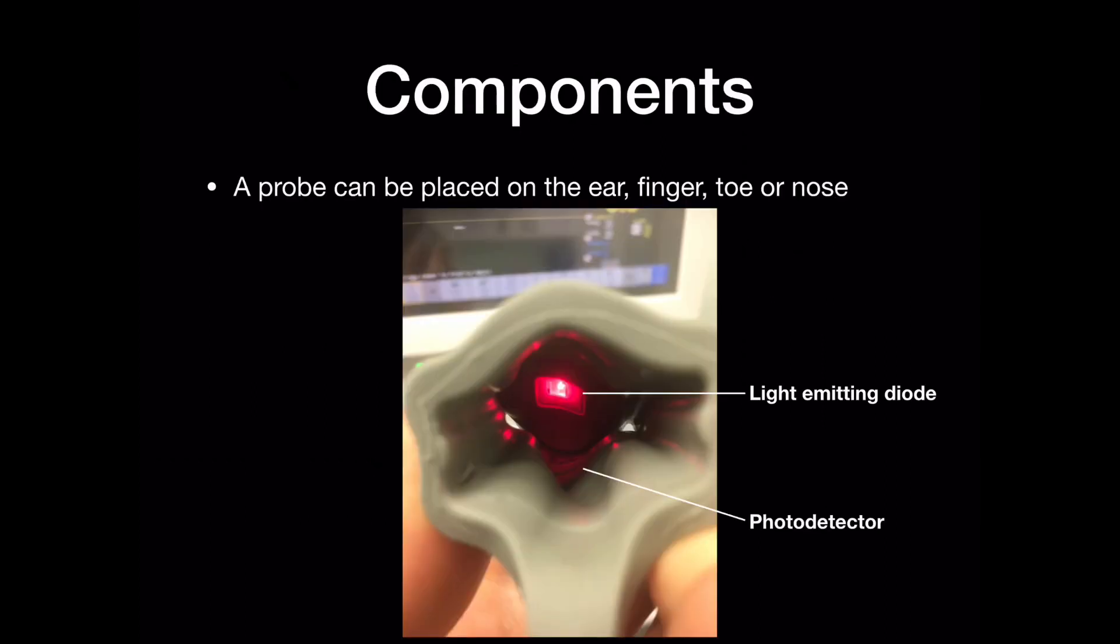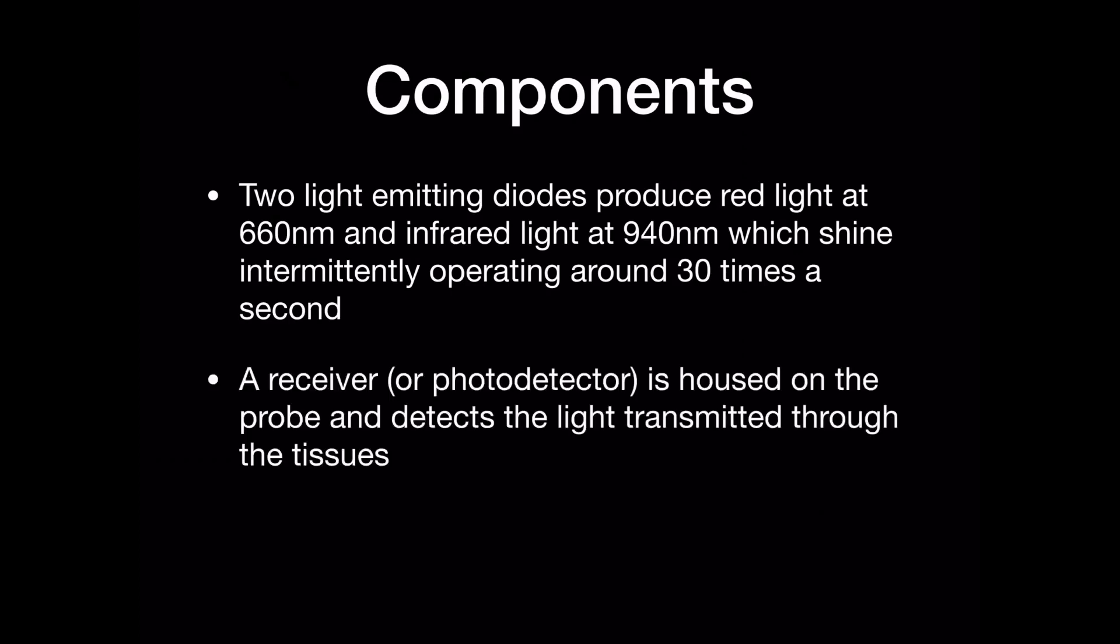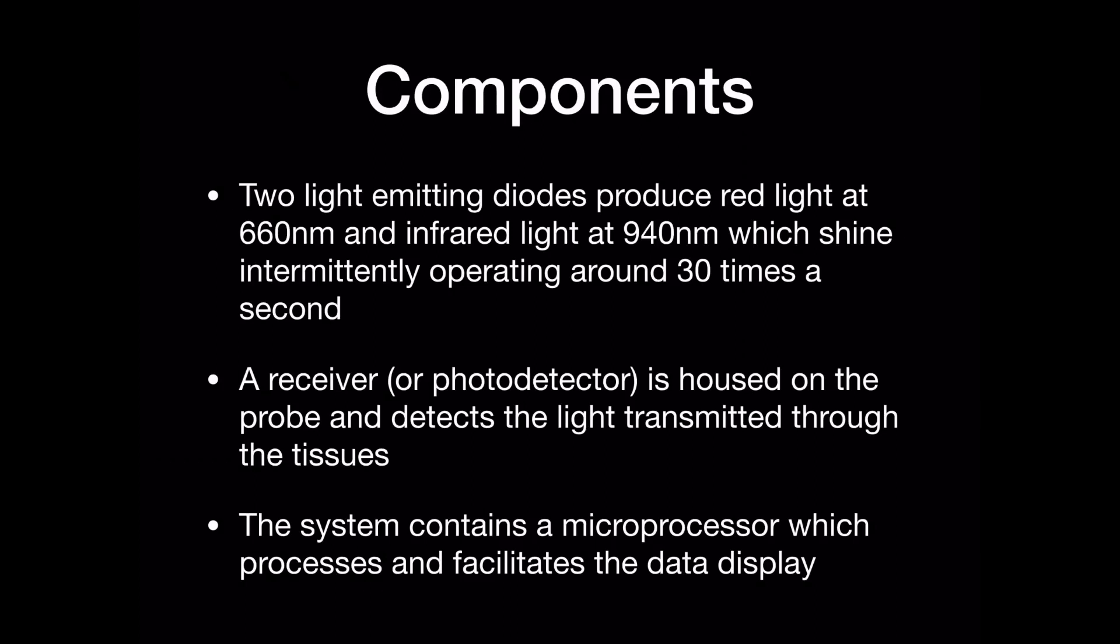Components. A probe can be placed on the ear, finger, toe or nose and two light emitting diodes produce red light at 660 nanometers and infrared light at 940 nanometers. These two light wavelengths shine intermittently operating around 30 times a second. A receiver housed on the probe detects the light transmitted through the tissues and the system contains a microprocessor which processes and facilitates the data.